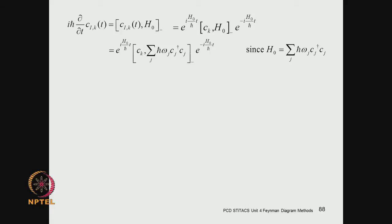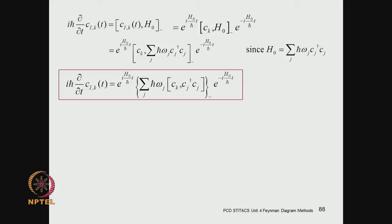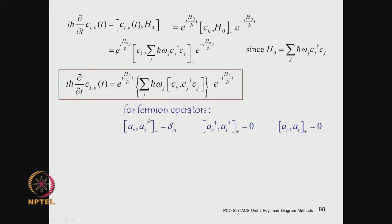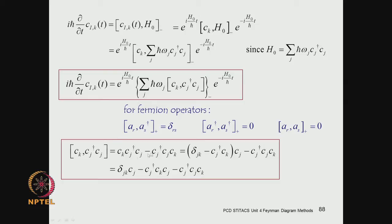The time derivative of the destruction operator is given by the commutator of the destruction operator with H0. We know H0 in terms of creation and destruction operators, so we factor out sum over j of h-bar*omega_j, and then find the commutator of c_k with c_j†c_j. That is determined simply using the fundamental anti-commutation relations for fermion creation and destruction operators. Working out the commutator c_k with c_j†c_j, the two terms cancel, and we get only one operator c_j times a Kronecker delta, so the summation contracts leaving only one term.